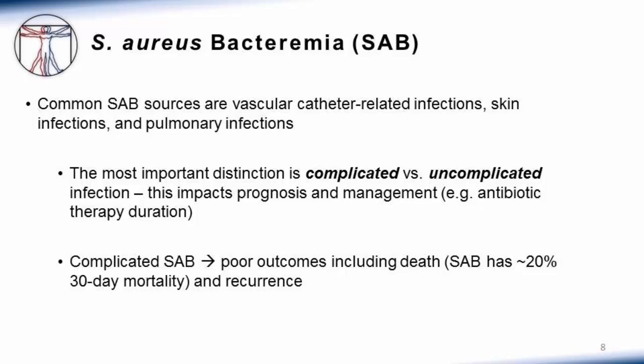For patients who have complicated infections — primarily staph that has landed elsewhere, either on hardware or has set up deep tissue abscesses — these patients have a worse prognosis and need to be managed differently, for example with longer durations of antibiotic therapy. Complicated staph aureus bacteremia is associated with poor outcomes, including death in a remarkable 20%, or one out of five patients, within 30 days of diagnosis. Even patients who appear to do well with initial therapy are at risk for subsequent recurrence.